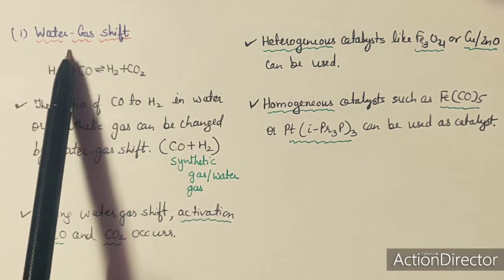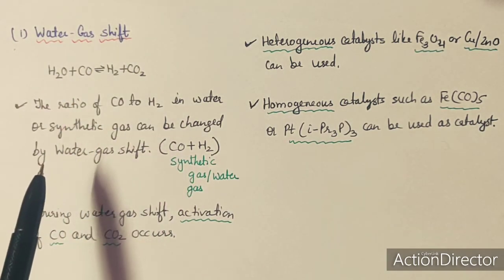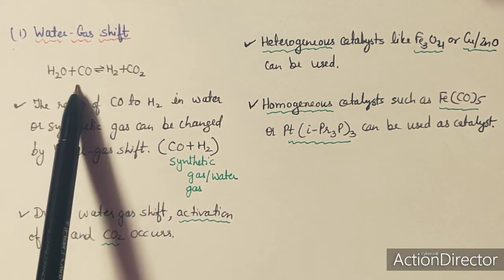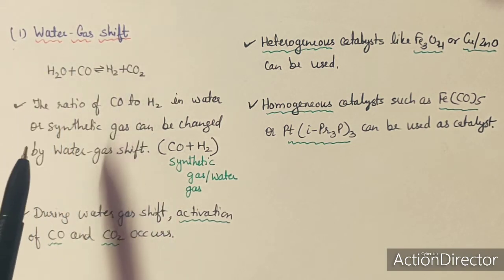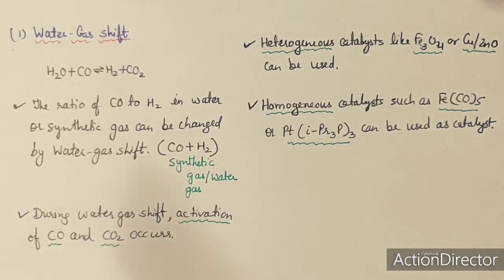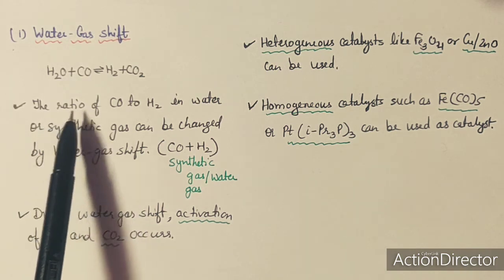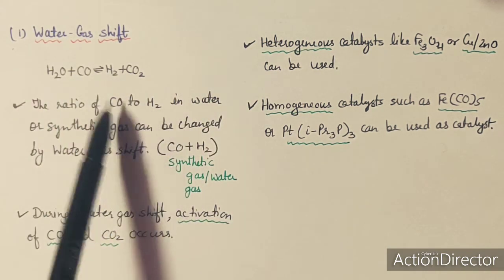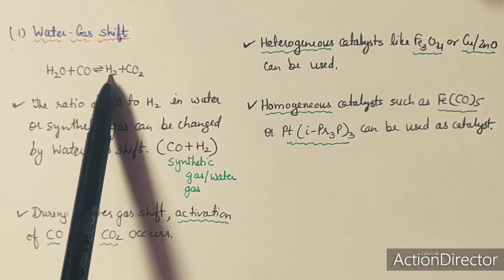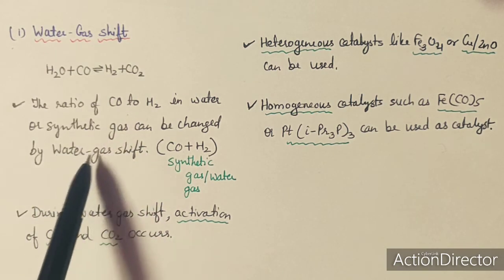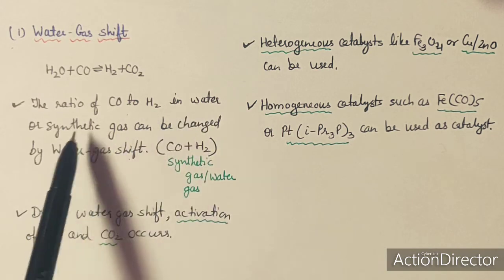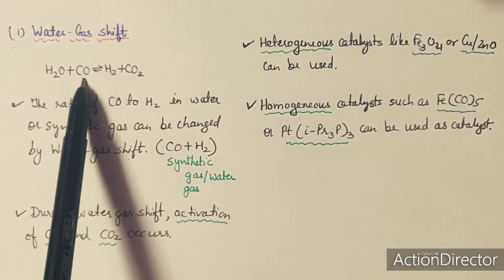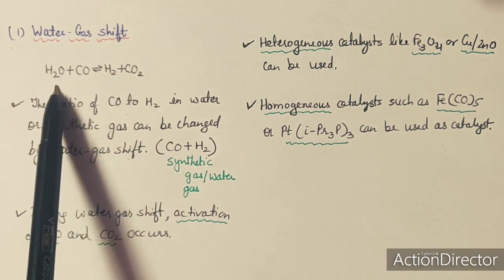One reaction is known as water gas shift. This reaction activates CO and CO2, which are small molecules. Water gas is actually CO plus H2, and the ratio of CO and H2 can be maintained with the help of water gas shift. In water gas shift, H2O and CO are in equilibrium with H2 and CO2.